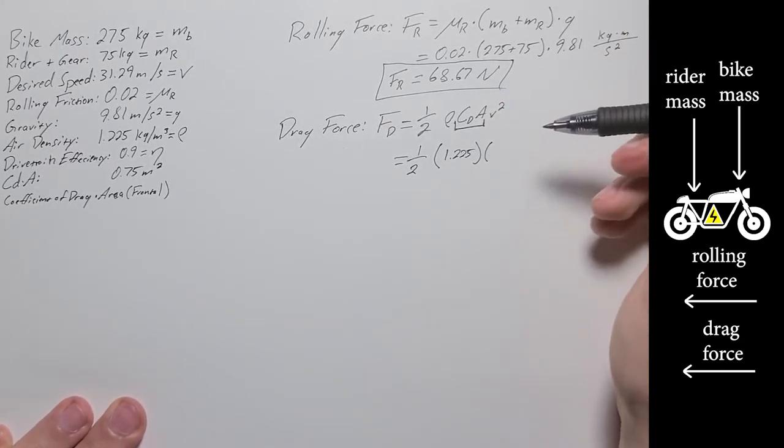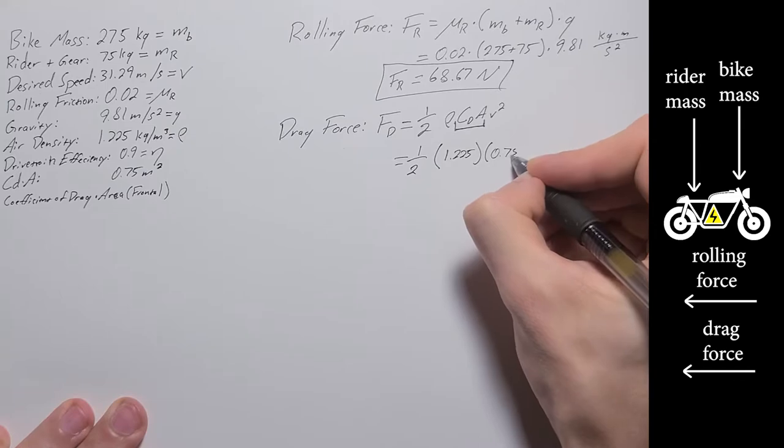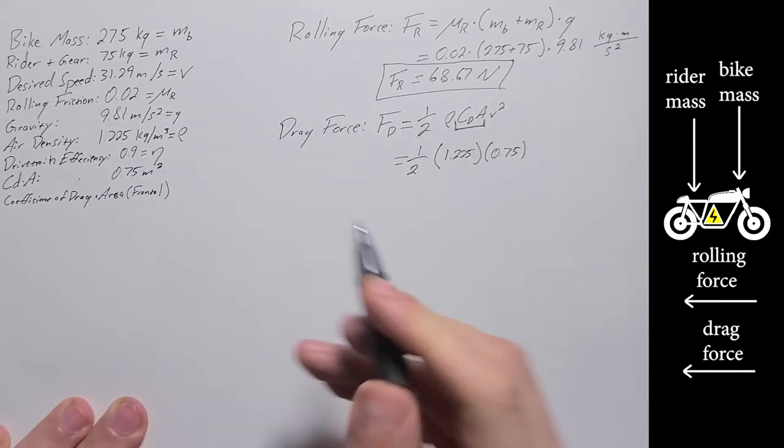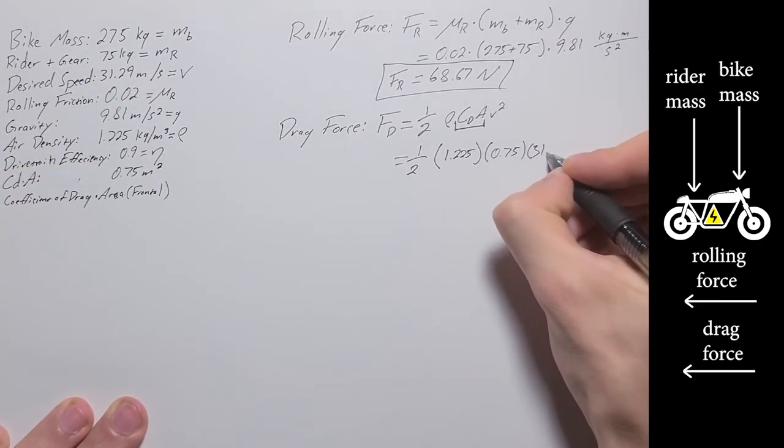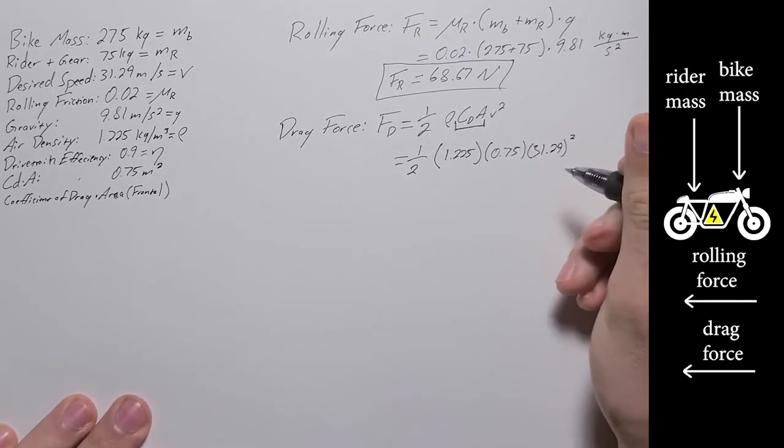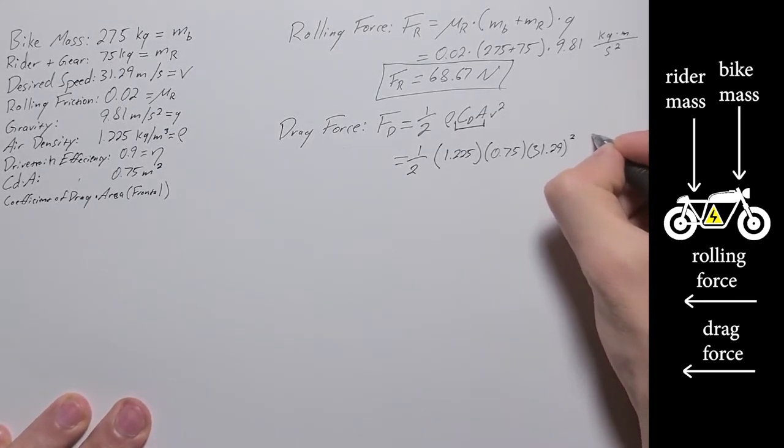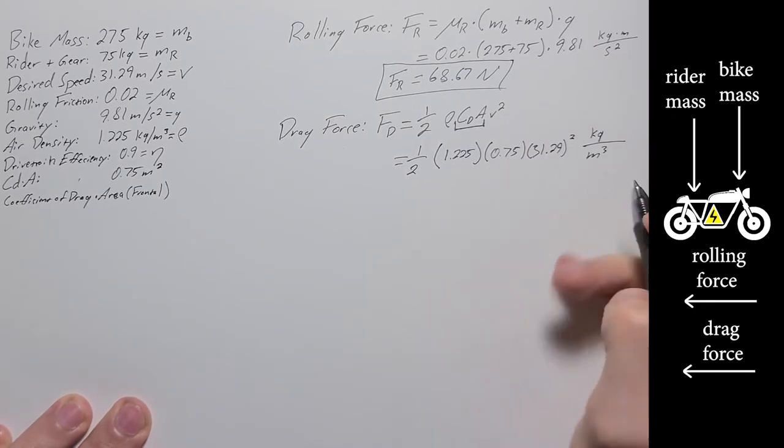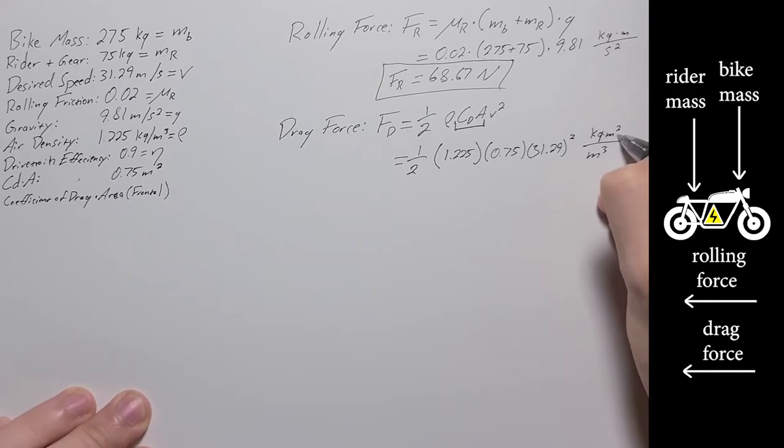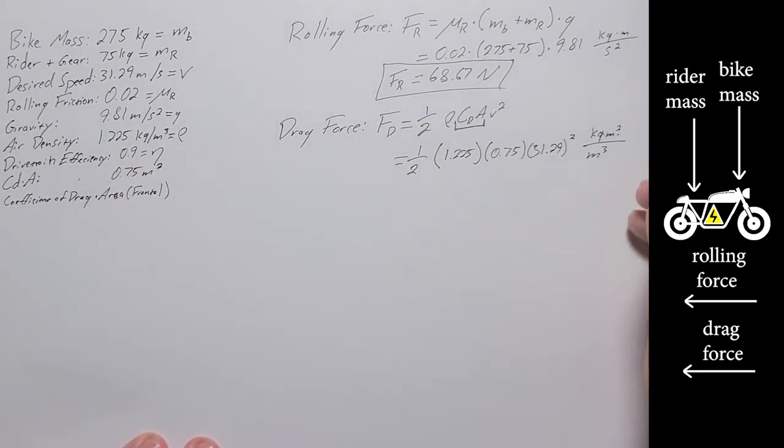So I'm just, again, basing off of some values for a combined CDA. So that is going to be our 0.75 from here. And then times velocity squared. So that is going to be speed 31.29 squared. So throwing down the units real quick, our 1.225 is in kilograms per cubic meter, 0.75 is in meters squared, and then our velocity is meters per second, but squared. So meters squared over second squared.